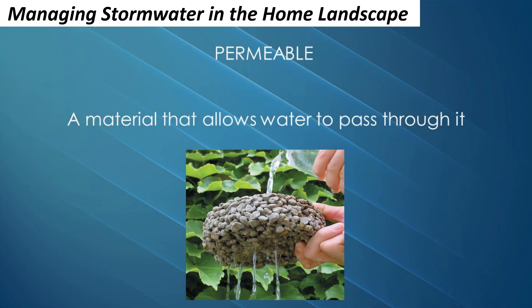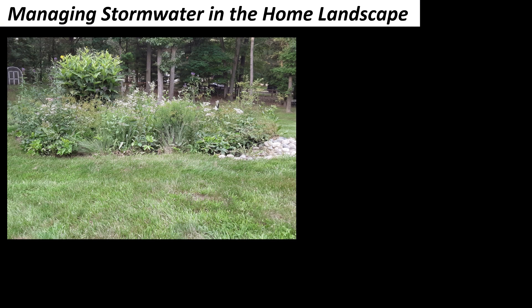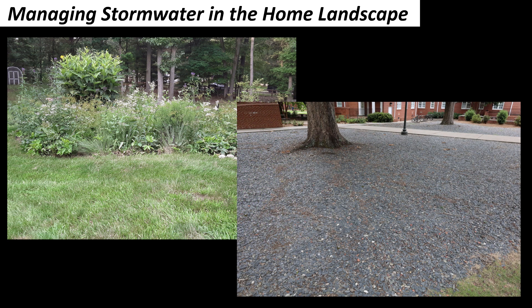One way to encourage infiltration instead of runoff is to create more permeable or pervious surfaces around your home. You can do this by introducing more planted areas and by using permeable paving or gravel instead of asphalt or concrete when possible.